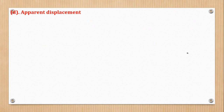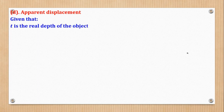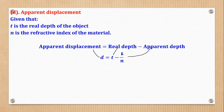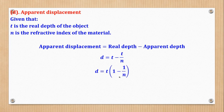Now, what about apparent displacement? If T is the real depth and N is the refractive index of the material, then apparent displacement D = real depth − apparent depth = T − T/N = T(1 − 1/N). That is the expression for apparent displacement.